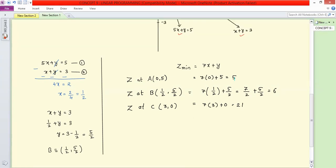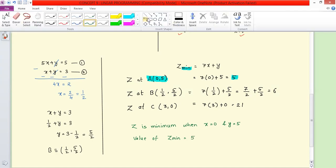From this, we have three values: 5, 6, and 21. We need to find the minimum. What is the minimum value of z? It's 5. And z is minimum at (0,5). So the final answer is: z is minimum when x equals 0 and y equals 5. The value of z minimum is 5. So this is your answer.